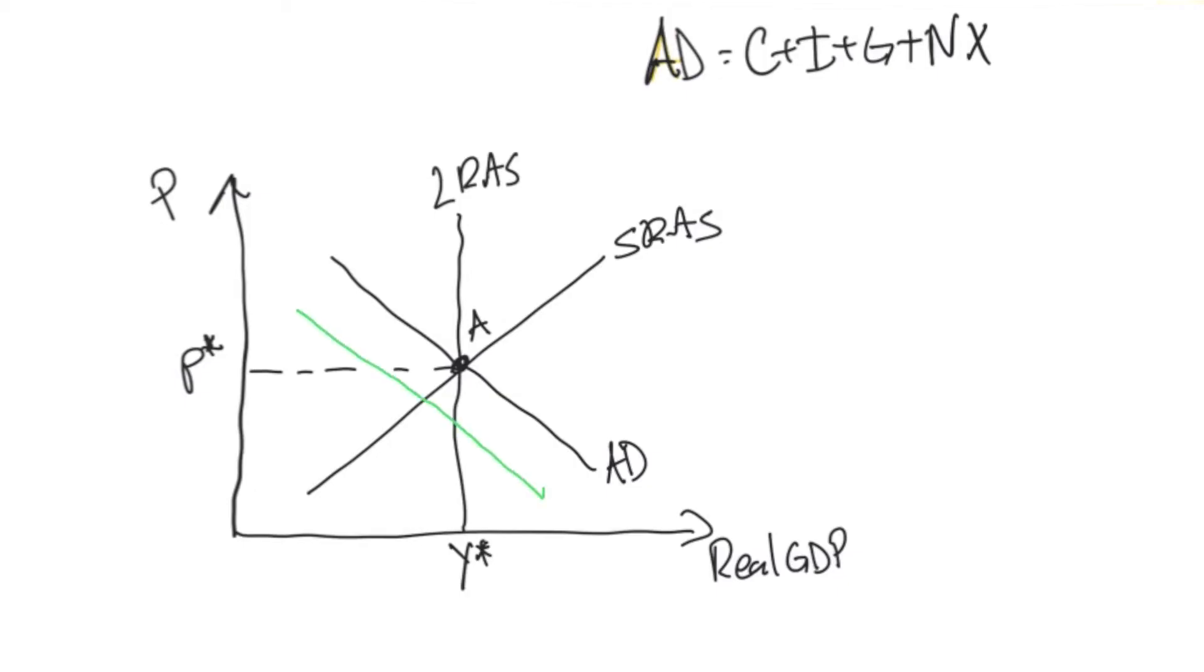So our aggregate demand curve is now at AD2. Our short run equilibrium is at point B. We call this our short run equilibrium because the intersection of aggregate demand and short run aggregate supply curve happens at a point that is not on our long run aggregate supply curve.